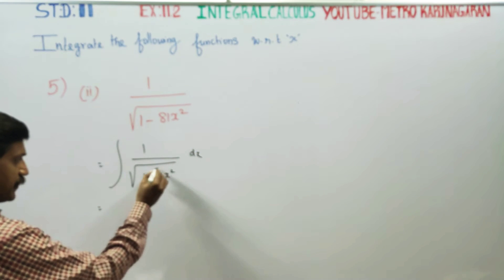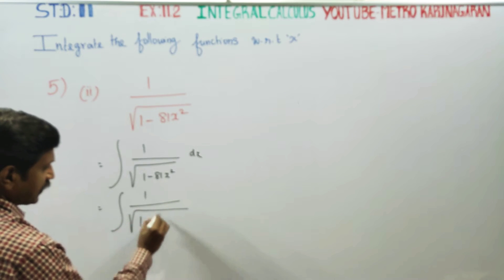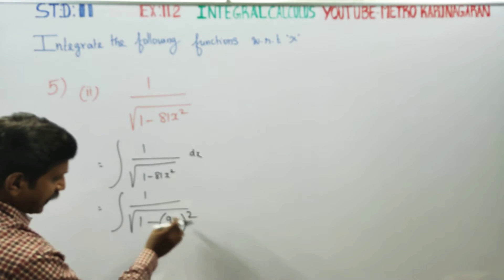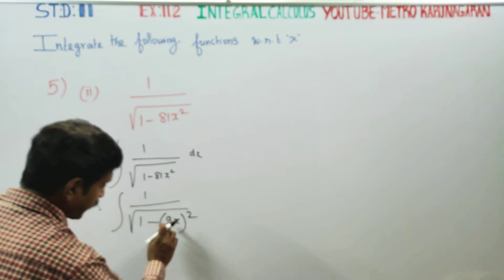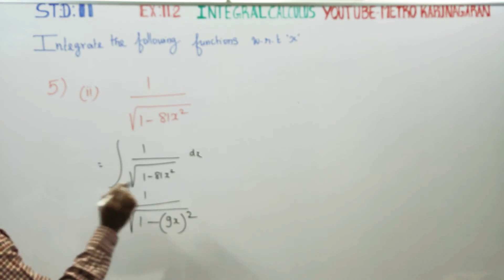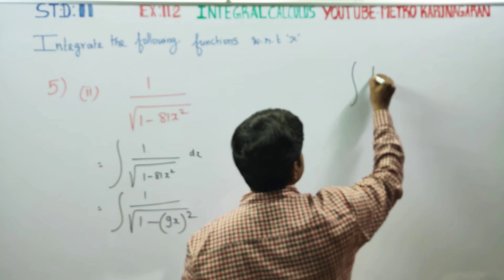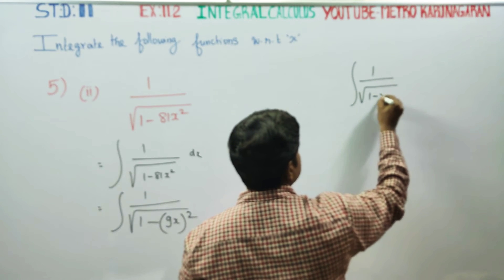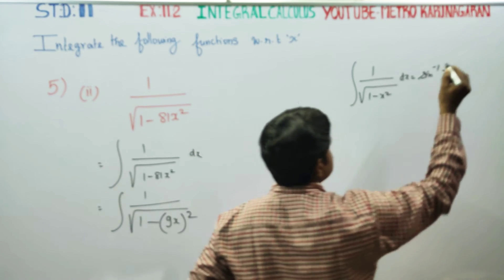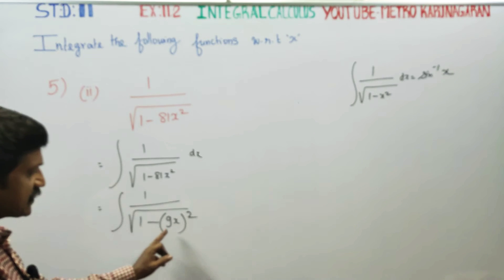First of all, we need to make the expression inside the bracket linear. So, root of 1 minus 9x whole square — the bracket function is linear and x power 1. So, integrating 1 by square root of 1 minus x squared dx, you will be getting sin inverse of x. The formula with 1 minus x squared is the standard formula.